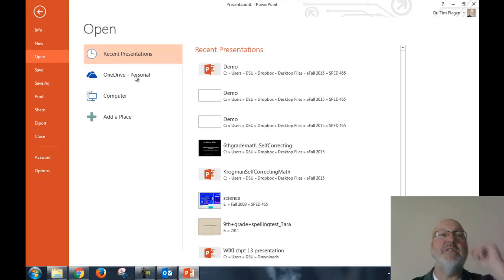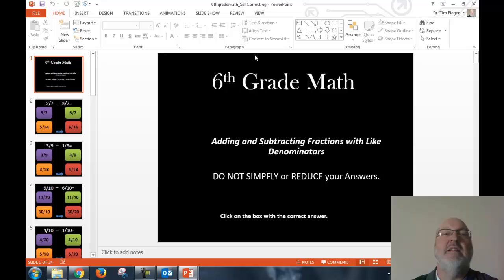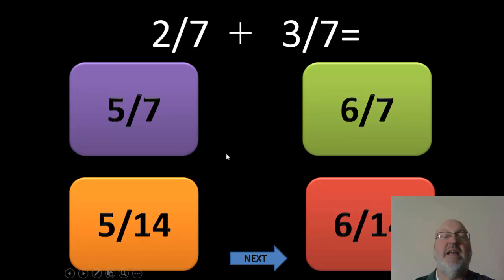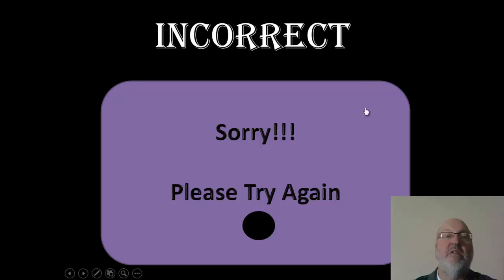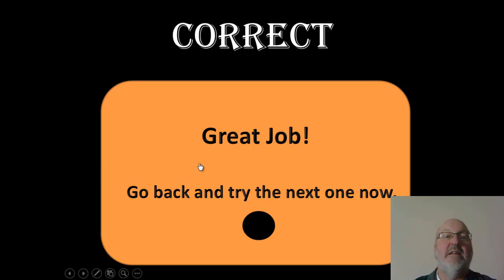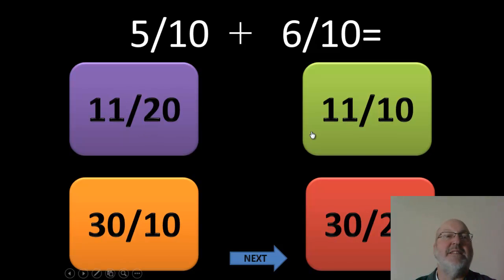Let me open a couple of previous examples so you get an idea of where we're headed. They always have to be in presentation mode like this. Here's a sixth-grade math example using a color scheme with instructions on the front. I'll click to the first question — it says 'add these together.' If I click a wrong answer it says 'sorry' and takes me back. If I click the correct one it advances me. That's what makes it self-correcting.